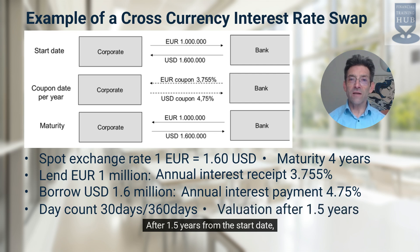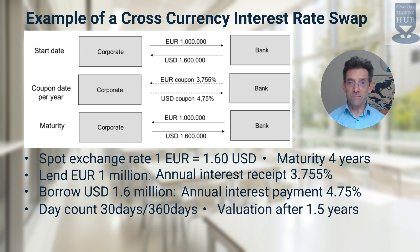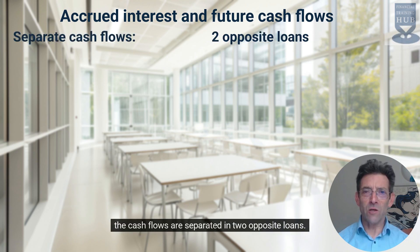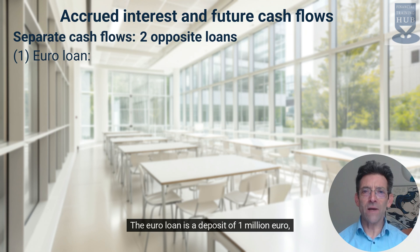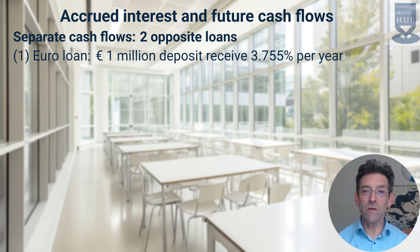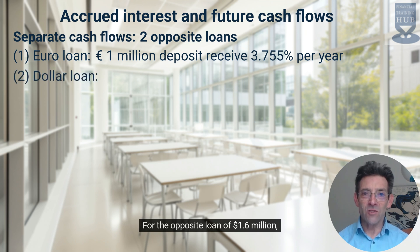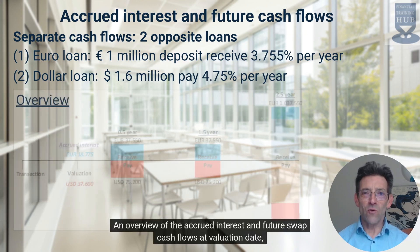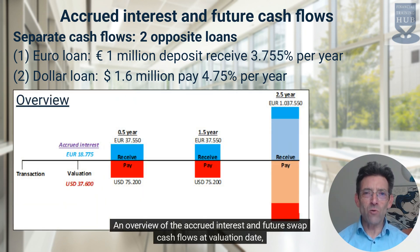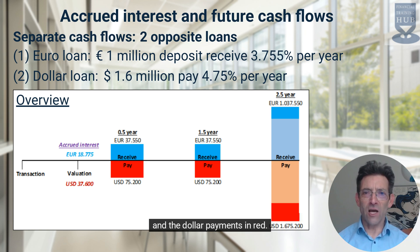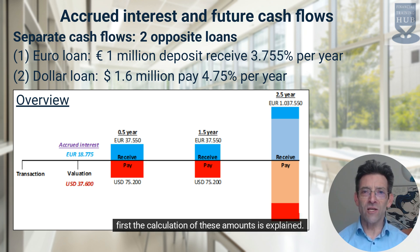After 1.5 years from the start date, the swap has to be valued. To value this swap, the cash flows are separated into two opposite loans. The euro loan is a deposit of one million euro where the corporate receives euro interest of 3.755% per year. For the opposite loan of $1.6 million, the corporate pays dollar interest of 4.75% per year. An overview of the accrued interest and future swap cash flows at valuation date is illustrated in the following scheme. The euro receipts are in blue and the dollar payments in red. Before continuing with the swap valuation, the calculation of these amounts is explained.